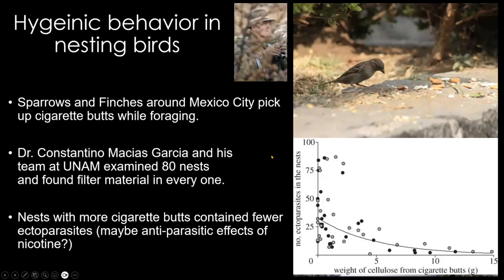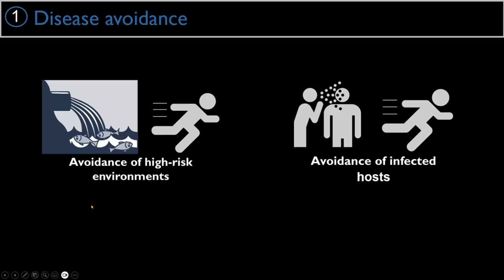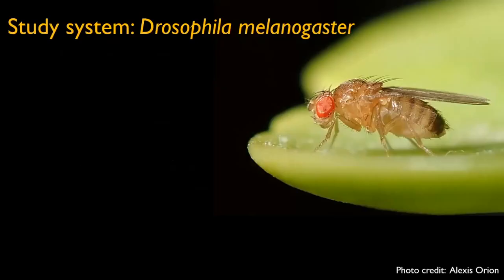Now we're going to talk about disease avoidance using the fruit fly as a test system. Most people think of fruit flies as an annoyance or biologists think of them as flying bags of genes. But I think they're a really interesting animal from a behavioral and ecological perspective. They aggregate on ephemeral food patches like rotting fruit, where they feed, mate, lay eggs, and males have boxing matches to fight over resources.